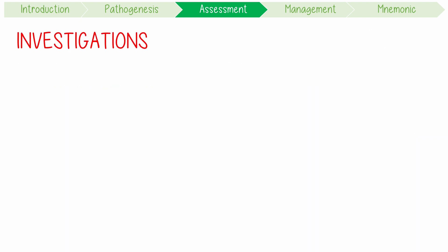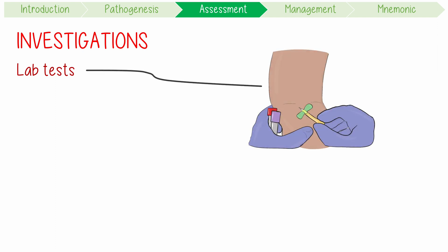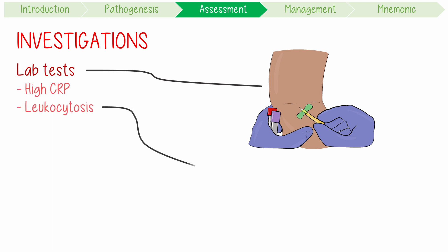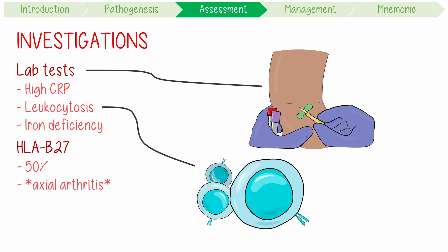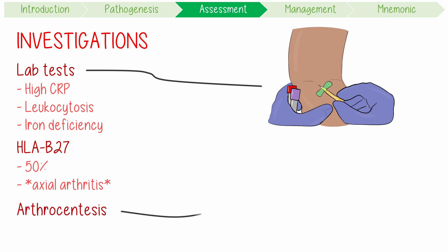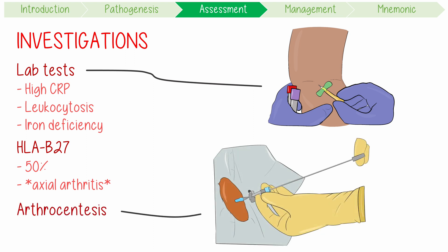When investigating enteric arthritis, remember your lab tests will reflect both the inflammatory bowel and inflammatory joint condition of your patient. Bloods might show a high CRP and leukocytosis. Iron deficiency might reveal an underlying anaemia of chronic disease. HLA-B27 is found in 50-75% of patients with IBD-associated axial arthritis. If an arthrocentesis is performed on one of the joints, the synovial fluid usually shows an inflammatory picture.